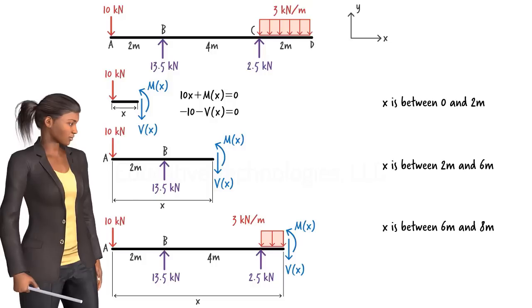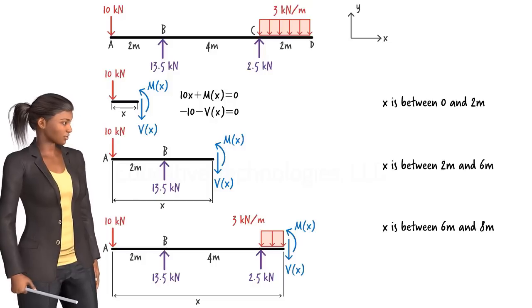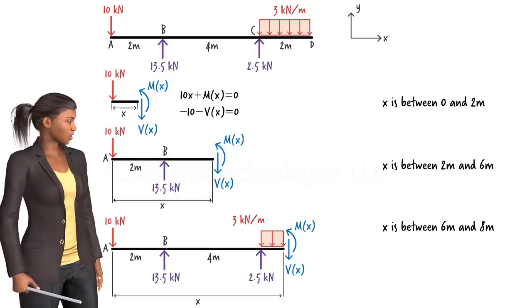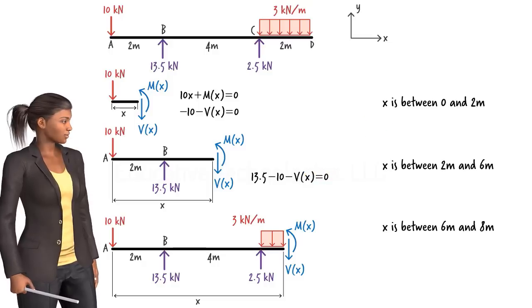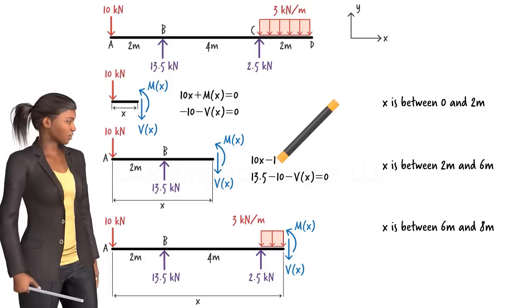For the middle segment, where X is between 2 and 6 meters, the shear and moment equations can be written in a similar manner. When we sum up the forces in the Y direction, we get the shear equation. And when we sum up the moments about the cut point, we get the moment equation.